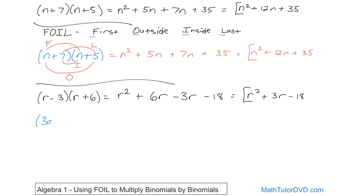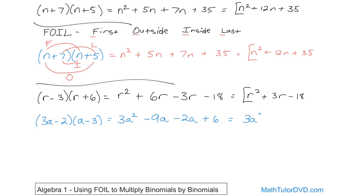The next problem is (3a − 2)(a − 3). Using FOIL: the first terms, 3a times a gives you 3a squared. The outside terms, 3a times negative 3 gives you negative 9a — don't forget the negative. The inside terms, negative 2 times a gives you negative 2a. The last terms, negative 2 times negative 3 gives you positive 6. Combining like terms, negative 9 minus 2 gives us negative 11a, so the answer is 3a squared minus 11a plus 6.